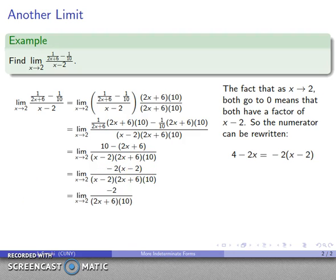And now as x gets close to 2, I don't have a denominator going to 0, so I have a chance of taking this limit. So as x gets close to 2, that's going to be negative 2, 2 times 2 plus 6 over 10, and after all the dust settles, we end up with minus 2 over 100 as my limit.